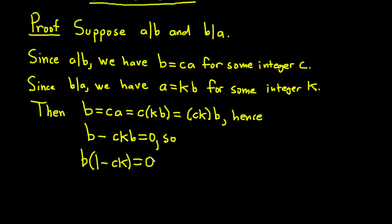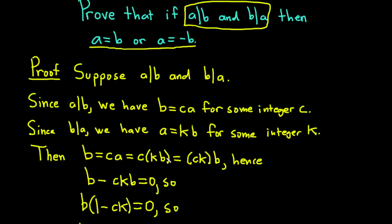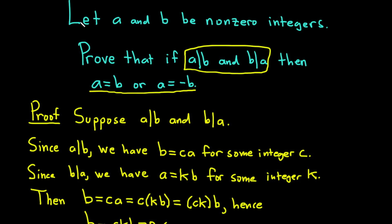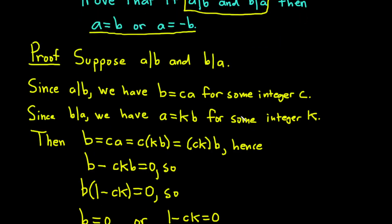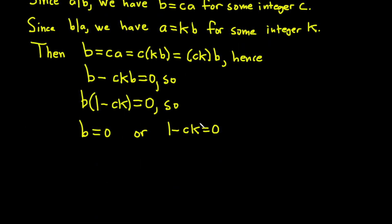Whenever we have a product of integers equal to zero, we can set each factor equal to zero. So either b equals zero, or 1 minus ck equals zero. But from the beginning of the problem, b cannot be zero — it says let a and b be non-zero integers. So we can exclude that case and focus on 1 minus ck equals zero, giving ck equals one.